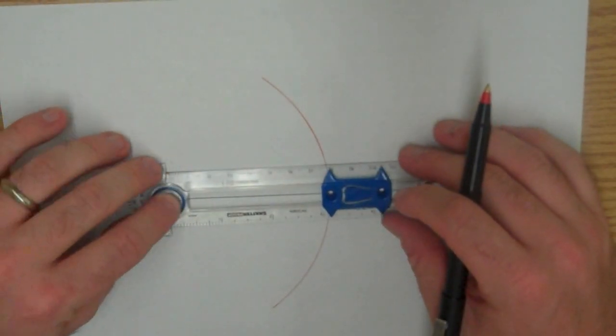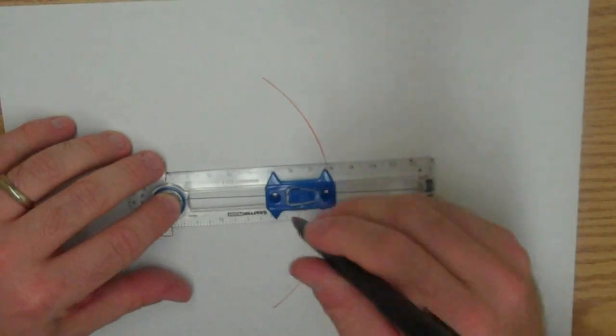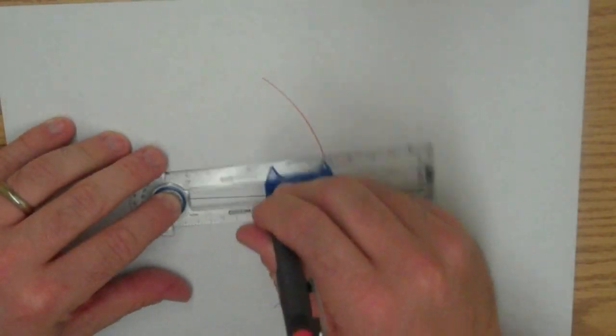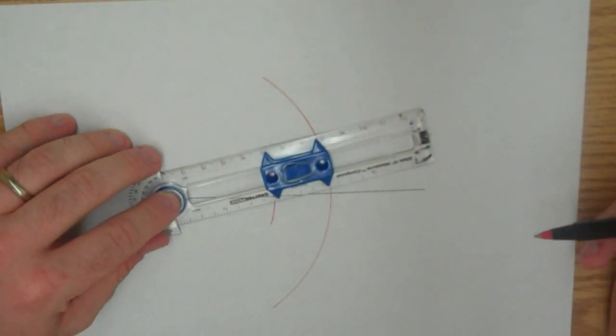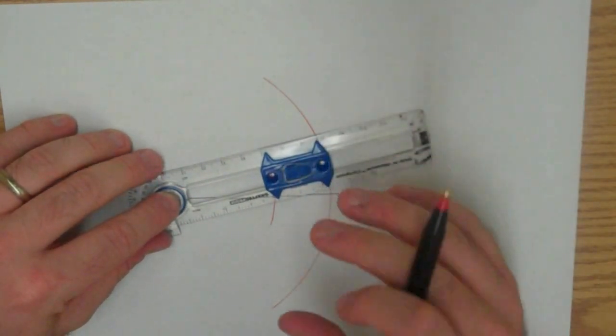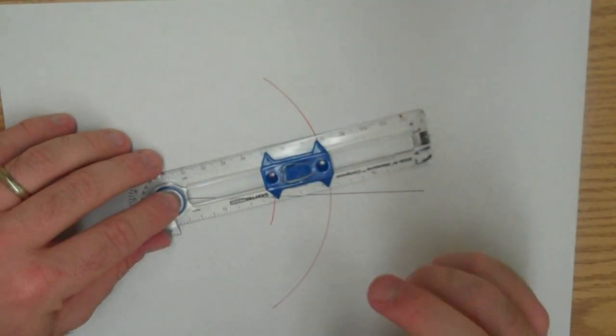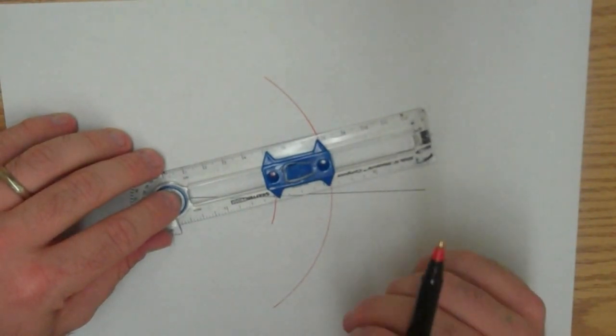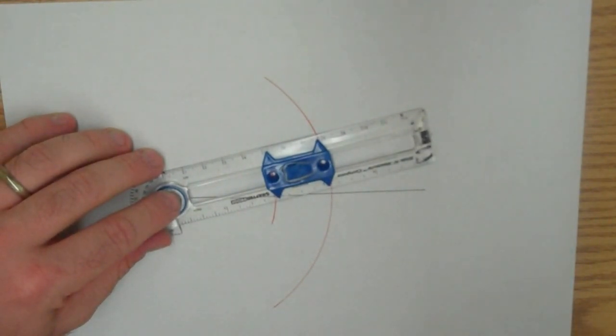One thing that I see students doing a lot that I want you not to do is going back and forth like so. That's not a good idea. These compasses tend to loosen up, and what you're going to end up with is a very thick arc mark, and you don't want that. You want your arcs to be very subtle.